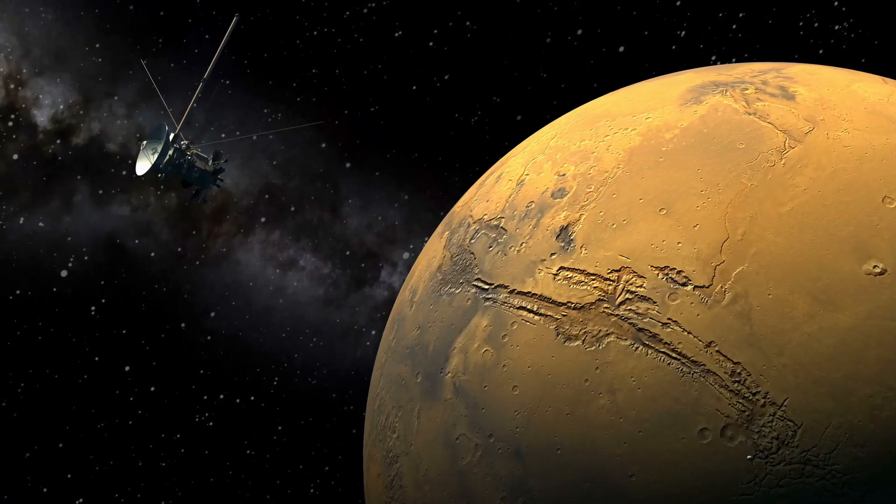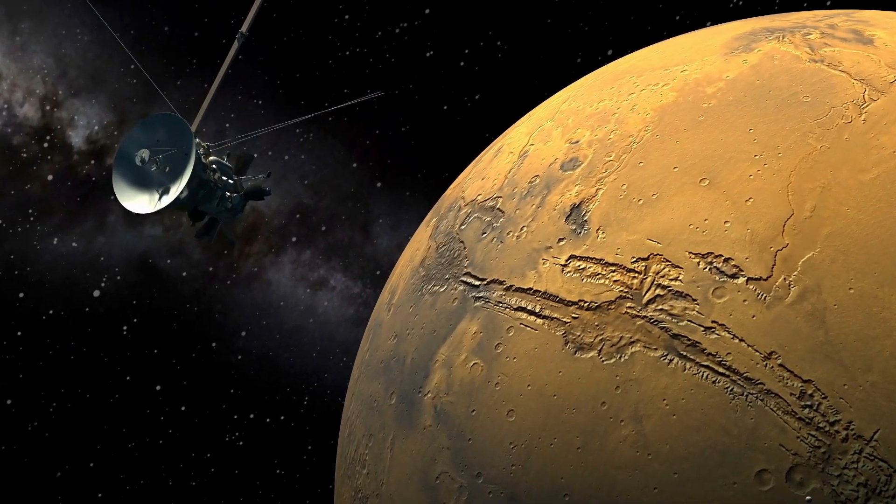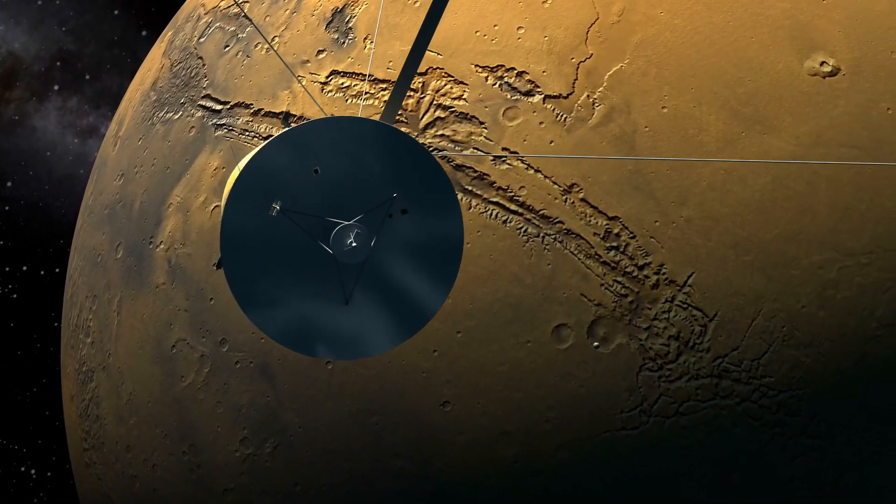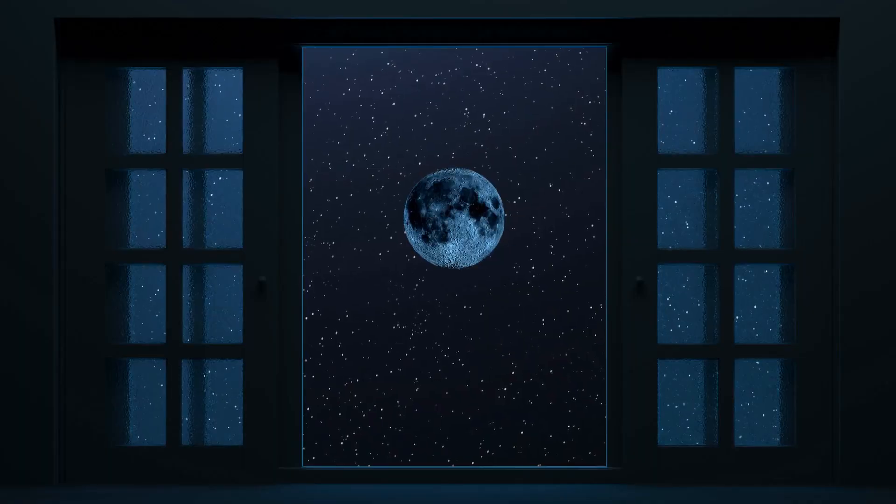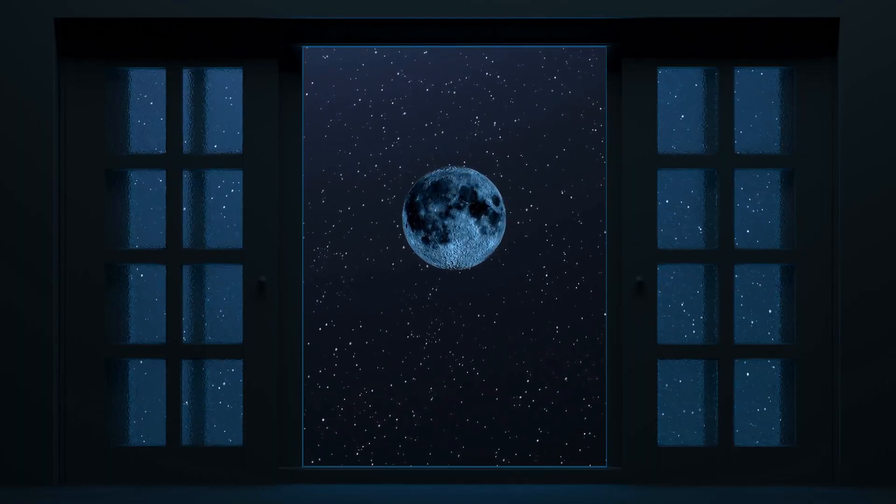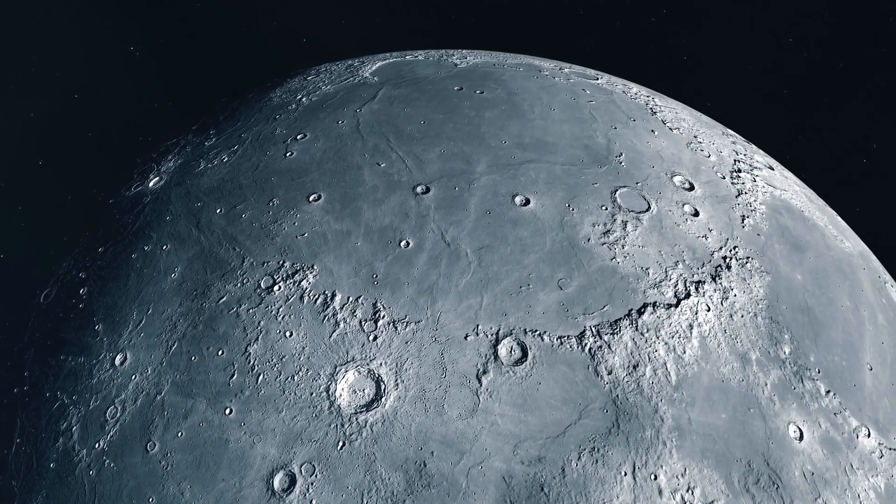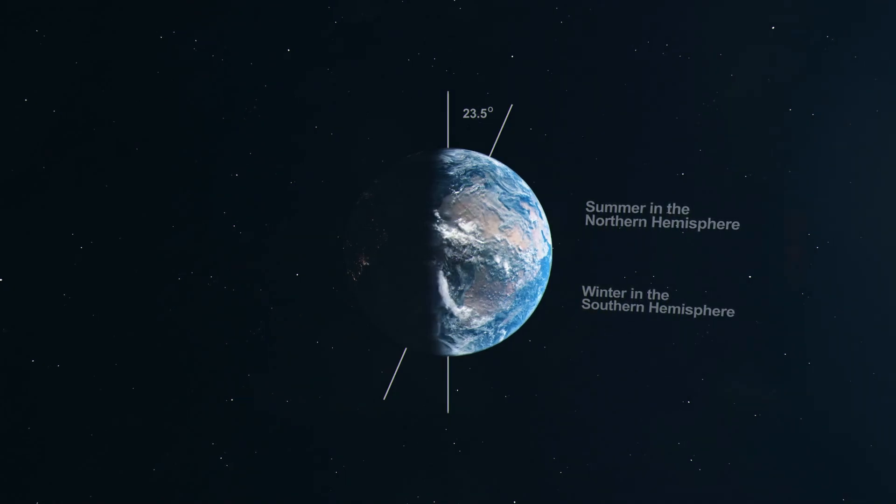The Voyager's huge amounts of information about the outer planets and their moons have completely changed how we think the solar system formed and how it has changed over time. Active geology and different climates on moons like Triton and Titan show that planetary systems form in a wider range of conditions than we thought before, challenging the way we think about planetary science.